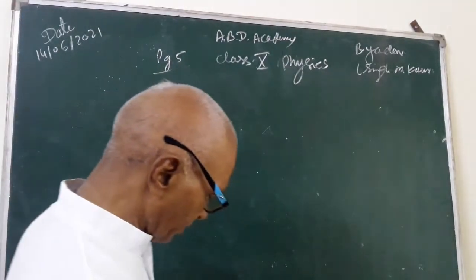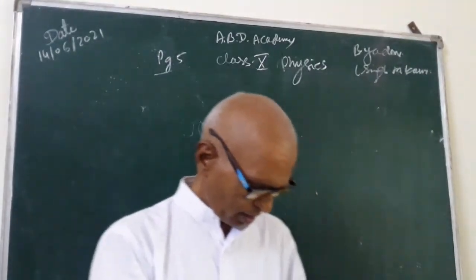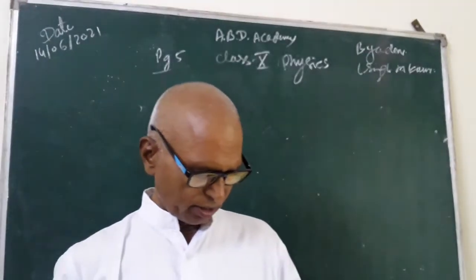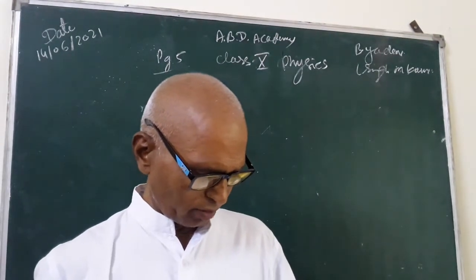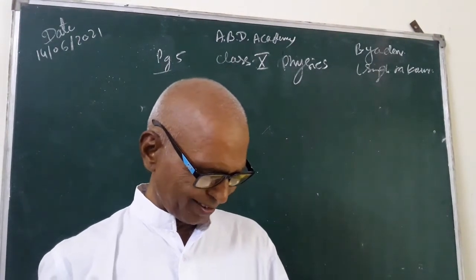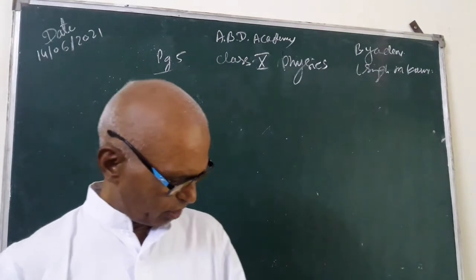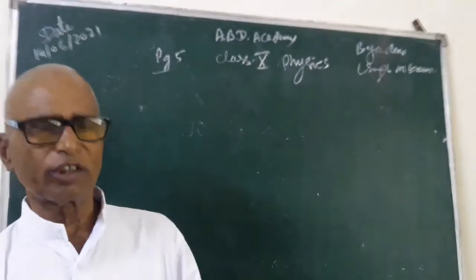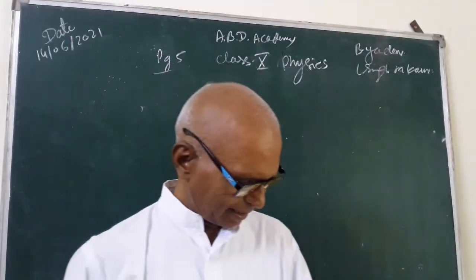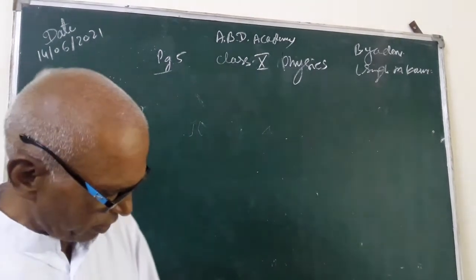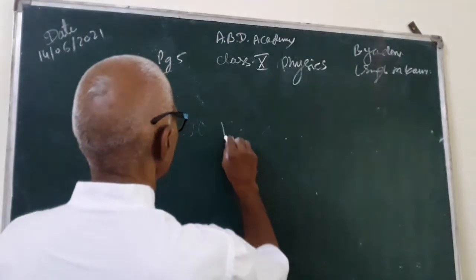Question 13. What do you understand by term electric potential? Electric potential at a point means, it is the measure of work done in bringing unit positive charge from infinity to a point in an electric field. What is unit of electric potential? Its unit is volt.